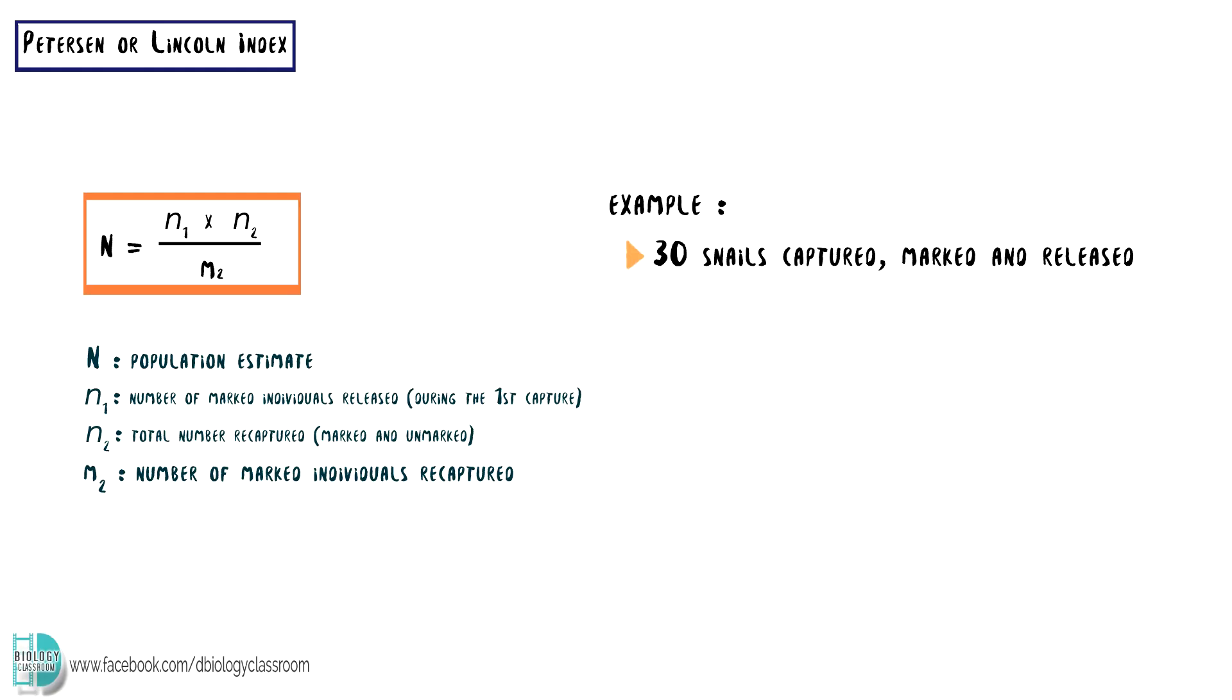For example, we capture 30 snails in a garden and mark all of them. During the recapturing, 25 out of 60 snails recaptured are marked. So the total population estimate will be 30 times 60 divided by 25, which equals 72.